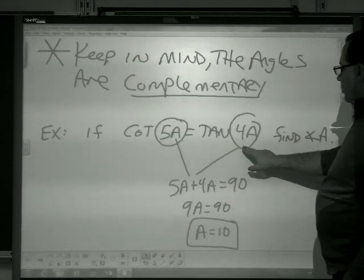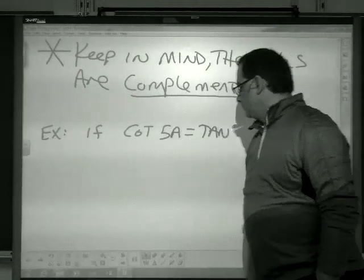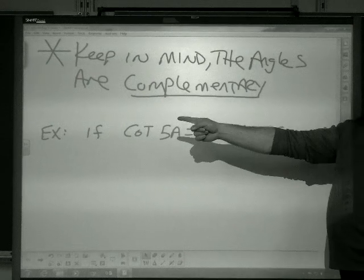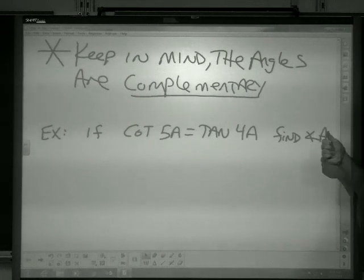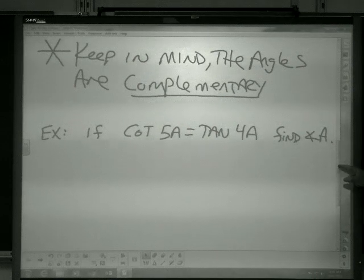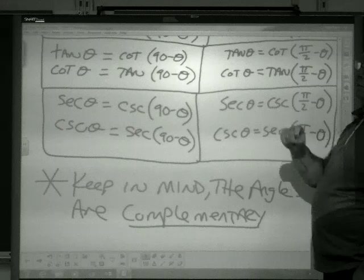So for example, let's take a look at this problem. If cotangent 5a equals tangent 4a, find the amount and angle a. Well, again, tangent and cotangent are co-functions of each other.